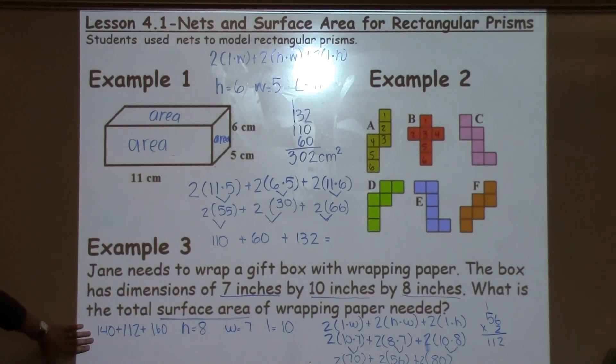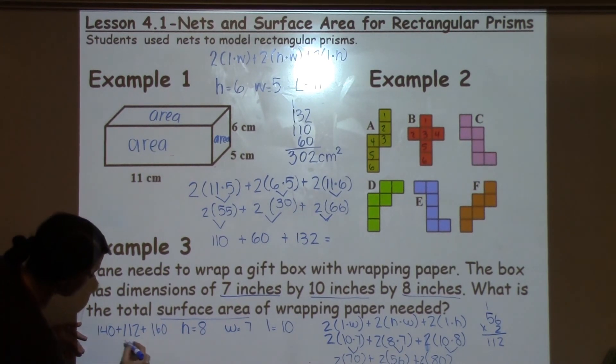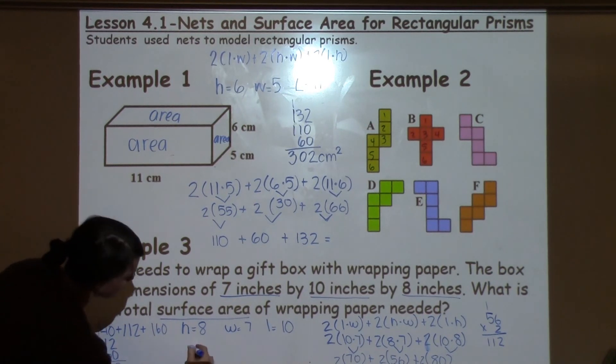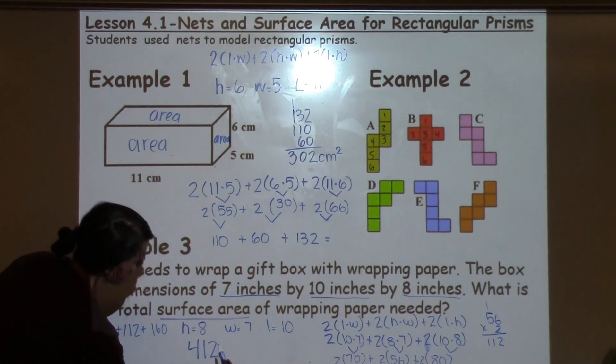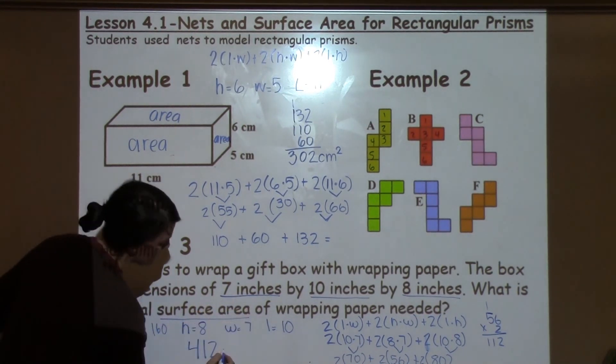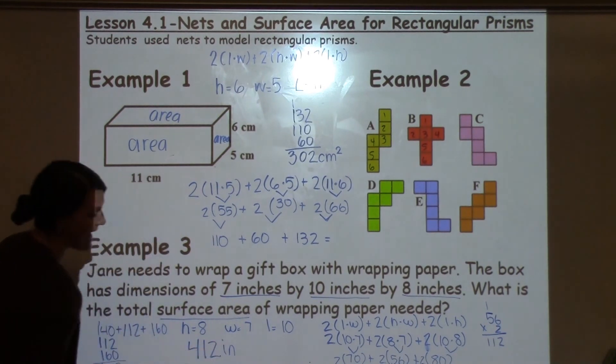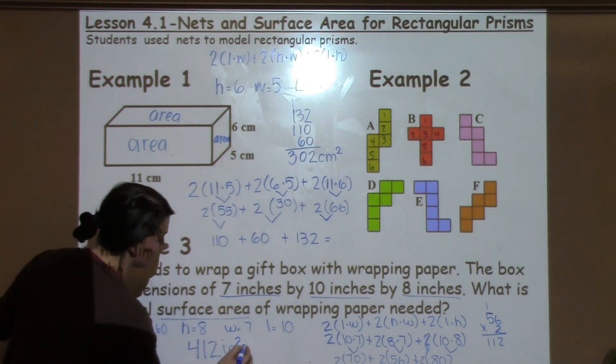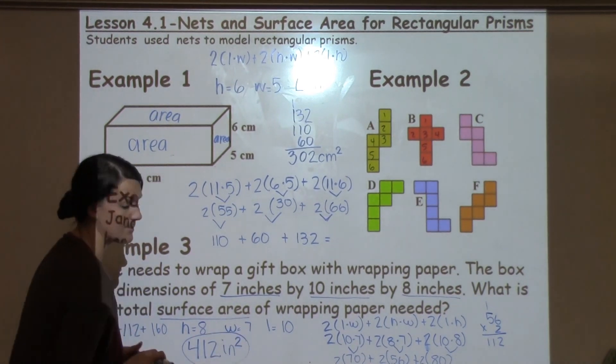So now that I have these three numbers, all I have to do is add them up. So I'm going to take 140 plus 112 plus 160. 6 plus 4 is 10 plus 1 is 11. And my answer becomes 412. I look back to see what unit we're working in. We're working in inches. And because I'm finding surface area, I'm going to square my units just like I would in an area problem.